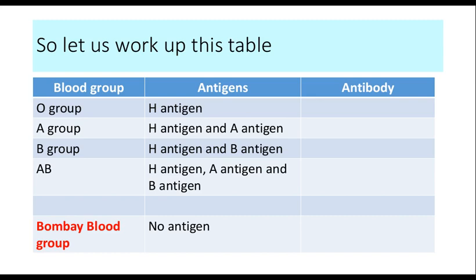Working through the ABO antibody table: a person with O blood group has H antigen but not A or B, so their serum contains anti-A and anti-B antibodies. A person with blood group A has A antigen and H antigen, so the body produces only anti-B. The B blood group similarly will have anti-A. The AB blood group expresses A, B, and H antigens, so since all three antigens are being expressed, no antibodies will be produced.